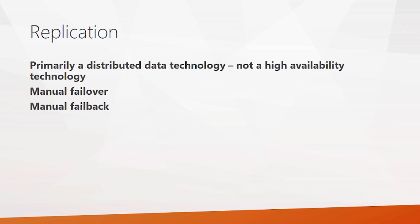Finally, let's talk about replication. Replication can be used as a high availability technology and many companies do use it that way, but it's not really what it's designed for — it's really designed for distributed databases and distributed reporting scenarios. It does have the advantage of allowing you to filter whichever data elements you want to replicate between different servers, which is an advantage over the other technologies. However, it is an entirely manual process — manual failover and manual failback — and in the case of replication, failing back can be an involved and complicated process, which makes it not as well suited for high availability.